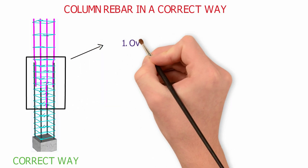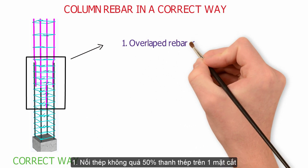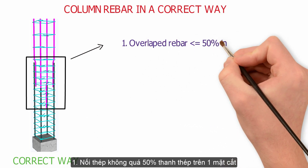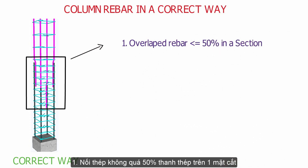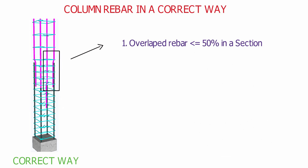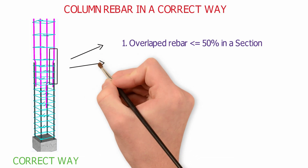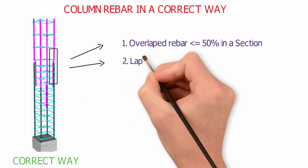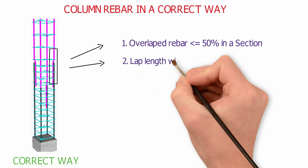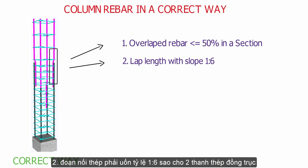Rule 1: Overlapped rebar not over 50% in a section. Rule 2: Lap length with slope 1 to 6, like this.